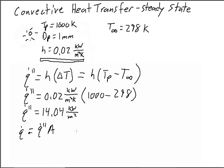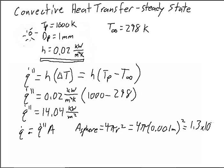And so we want to know the surface area of the sphere, which is equal to 4 pi r squared. And we need that r in terms of meters, so we have 4 pi times 0.001 meters squared, which is equal to 1.3 times 10 to the negative 5th meters squared.